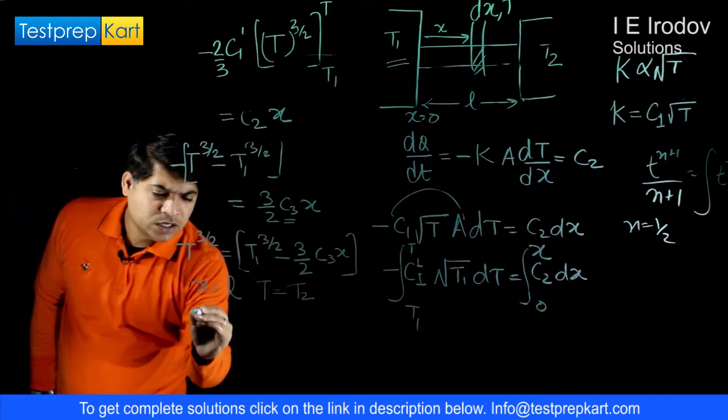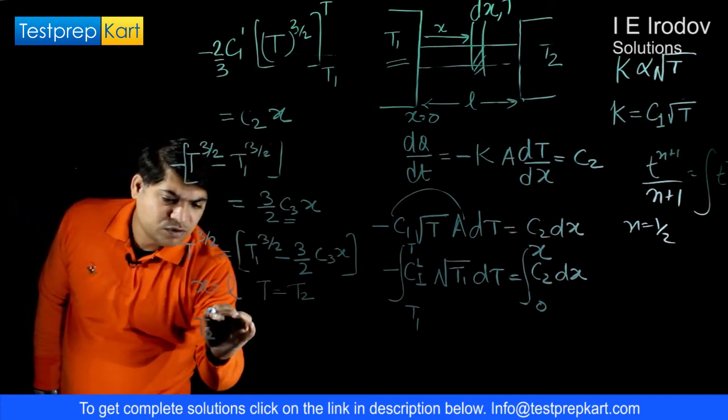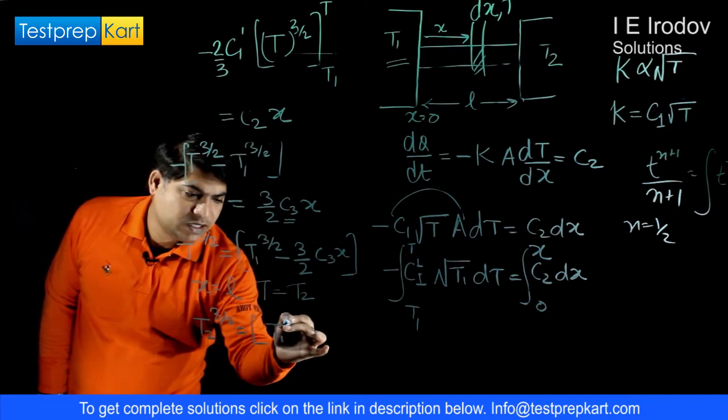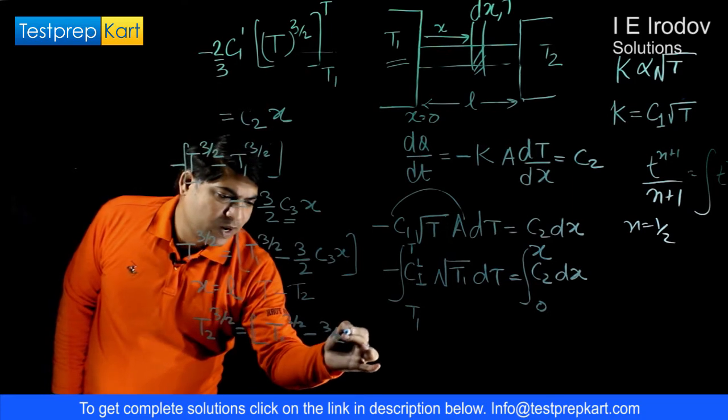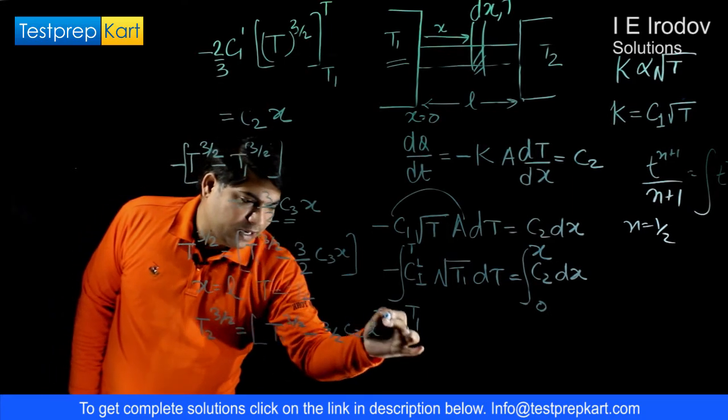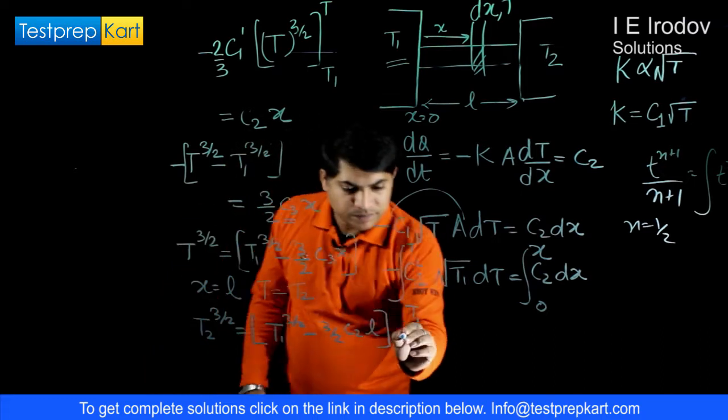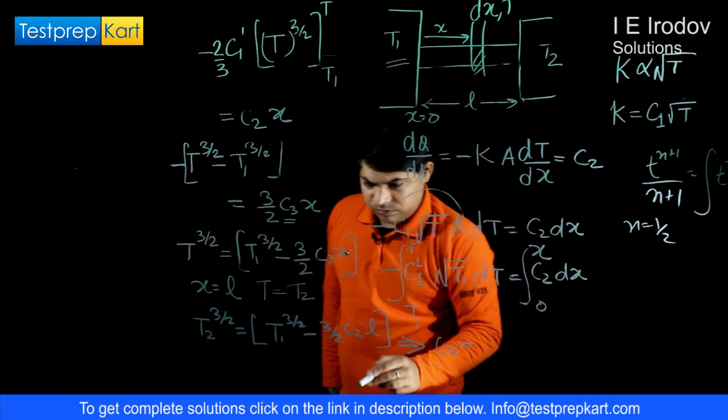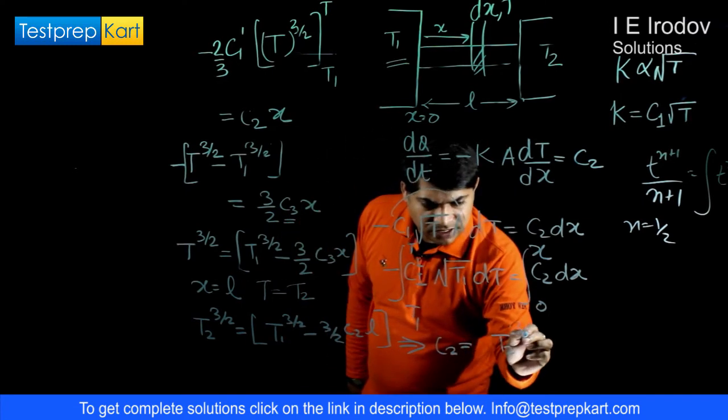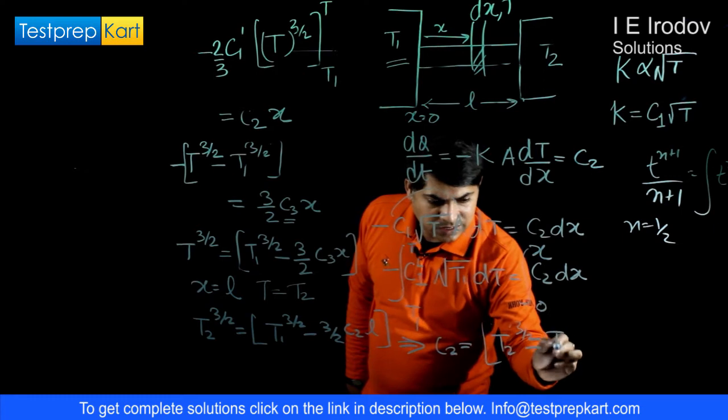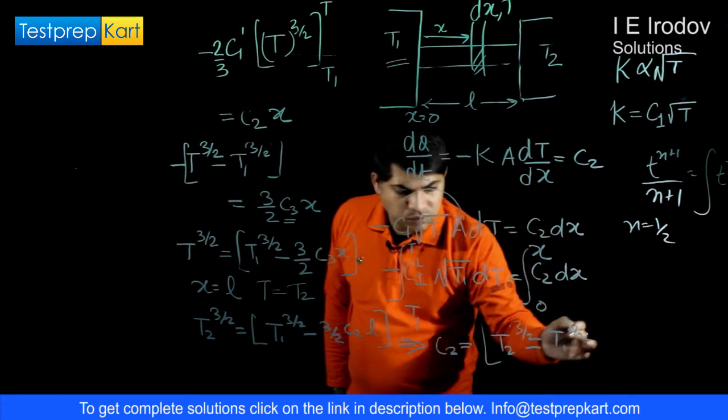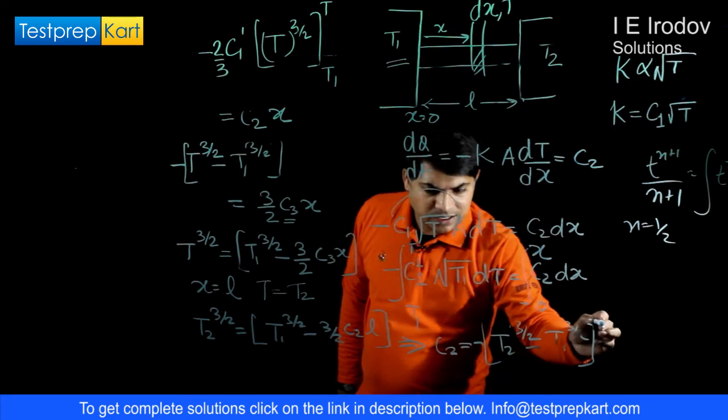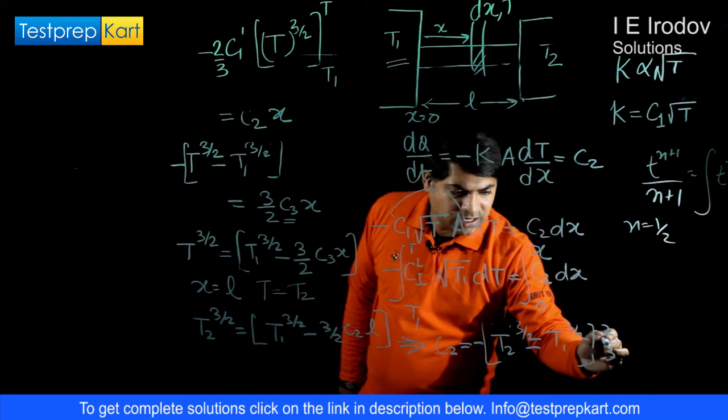We can replace here. From here we will get T2 to power 3 by 2 is equal to T1 to power 3 by 2 minus 3 by 2 C2 into L. From here we can calculate C2. This constant C2 is equal to T2 to power 3 by 2 minus T1 to power 3 by 2, negative of course there will be negative sign, into 2 by 3 into L.